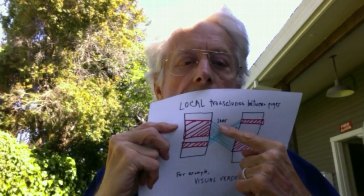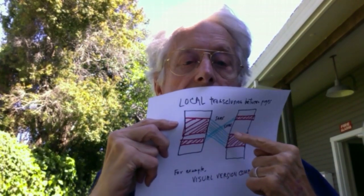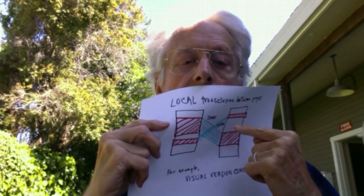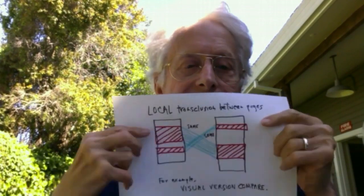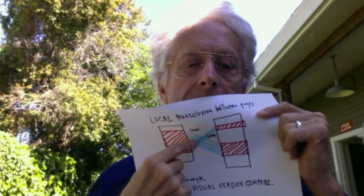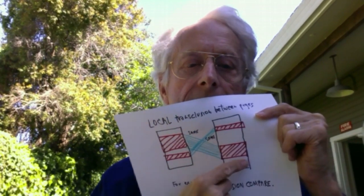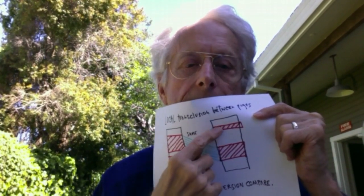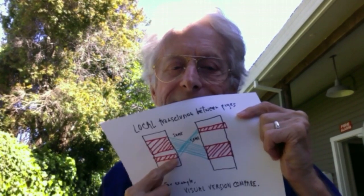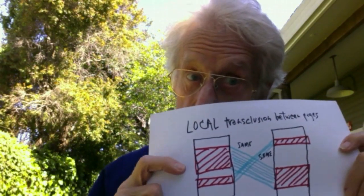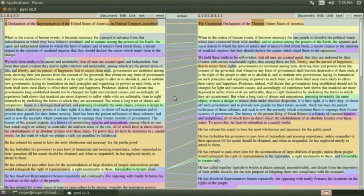So this part is the same. This part is the same. This part is the same as this. This part is the same as this. These are identities discovered by the Xanadu viewer. And remember that we showed you version compare in the Declaration of Independence — this is one way that local transclusion can look.